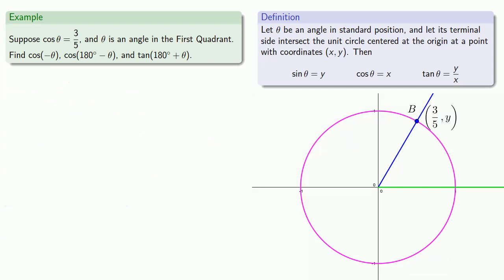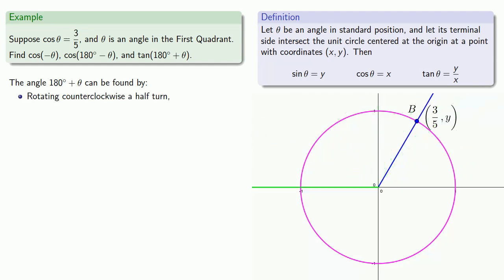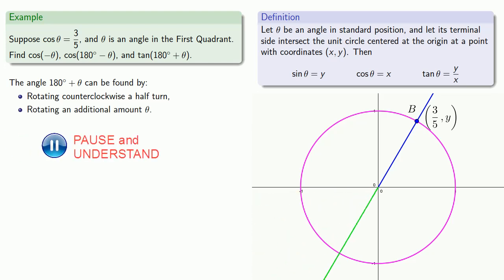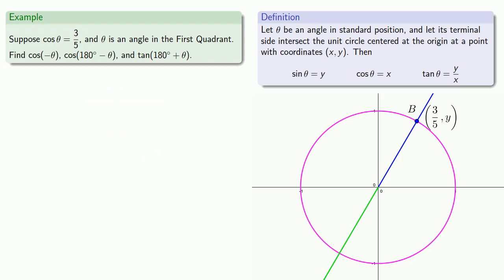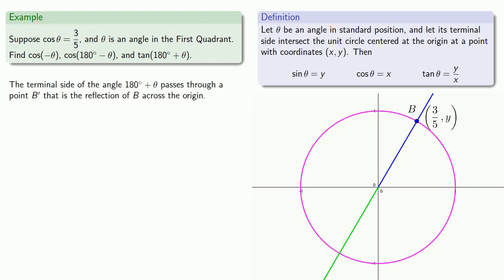How about the tangent of 180° + θ? The angle 180° + θ can be found by rotating counterclockwise a half turn and then rotating an additional amount θ. We see that the terminal side of the angle 180° + θ passes through a point P' that is the reflection of the point P across the origin. So the coordinates of this point will be (-3/5, -y).